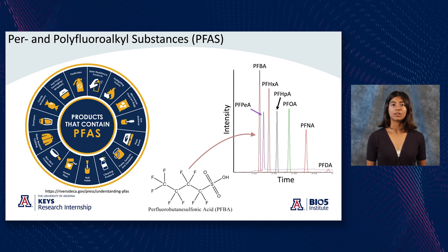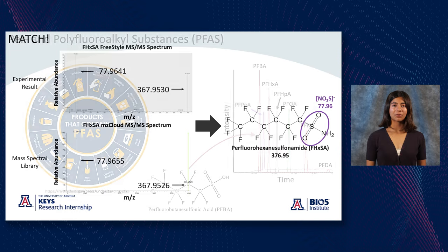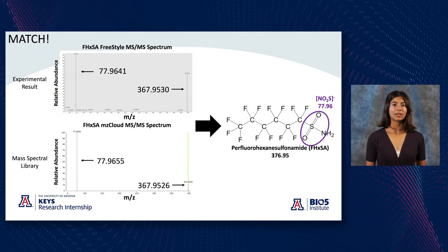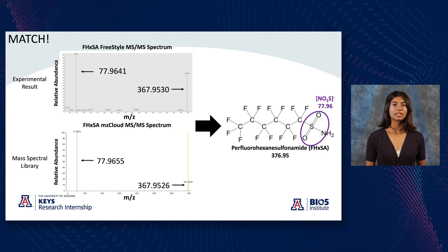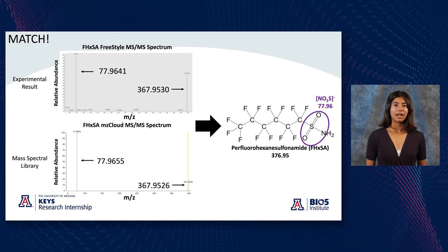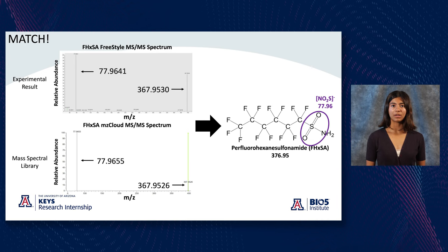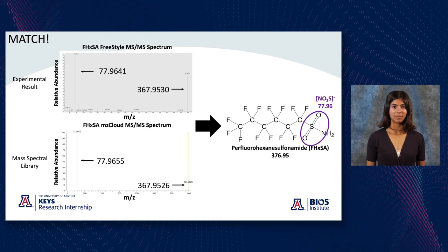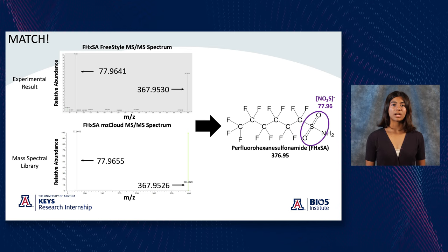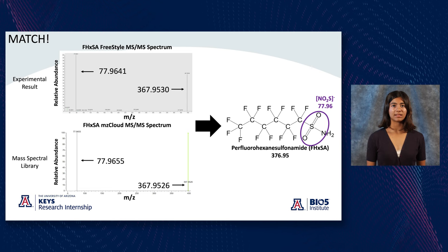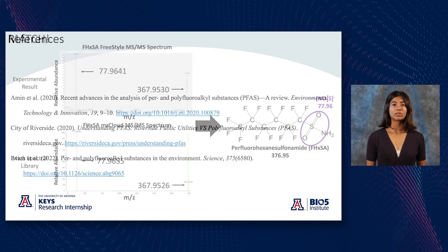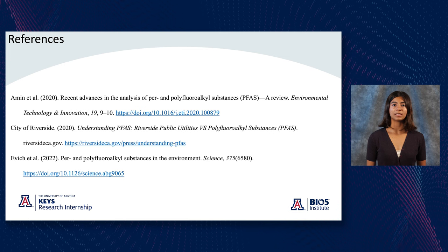One of our lab's main goals was to identify other prevalent PFAS within Arizona to expand the list routinely measured at the U of A. To do this, I used liquid chromatography and mass spectrometry to create chromatograms of detected compounds. I then used measured retention time, molecular mass, and fragmentation spectrum to compare those to an online database. This resulted in identifying perfluorohexane sulfonamide, or FHxSA, as a confidently identified compound, which means we can now add it to our routine measurement list and better analyze environmental samples. Thank you.